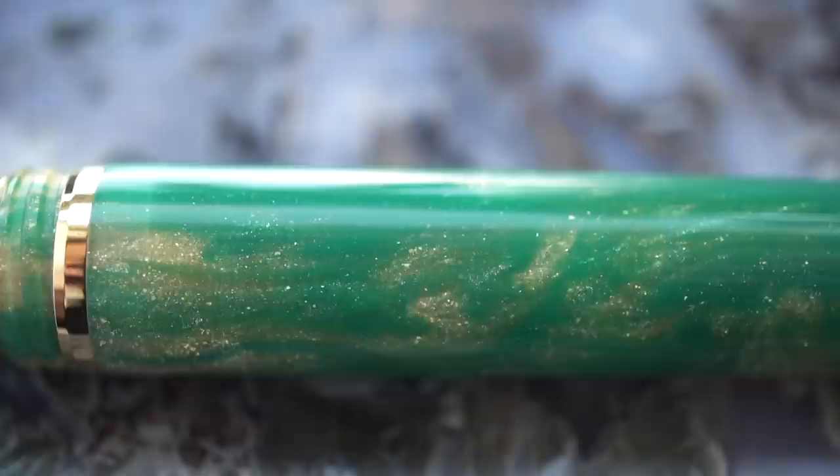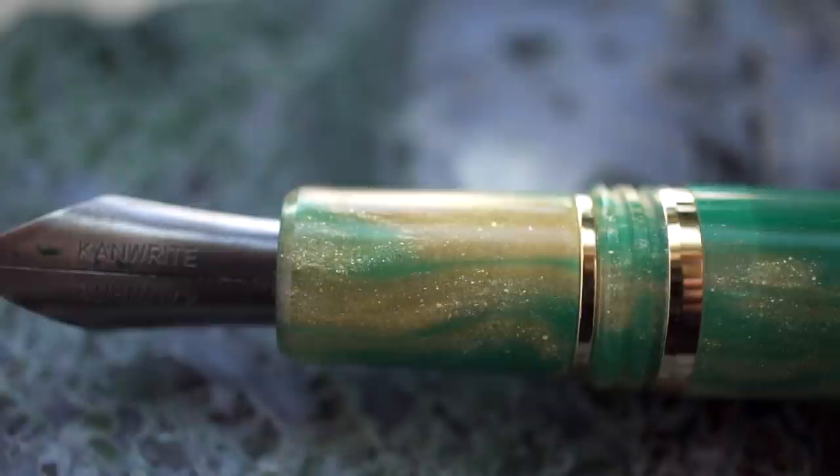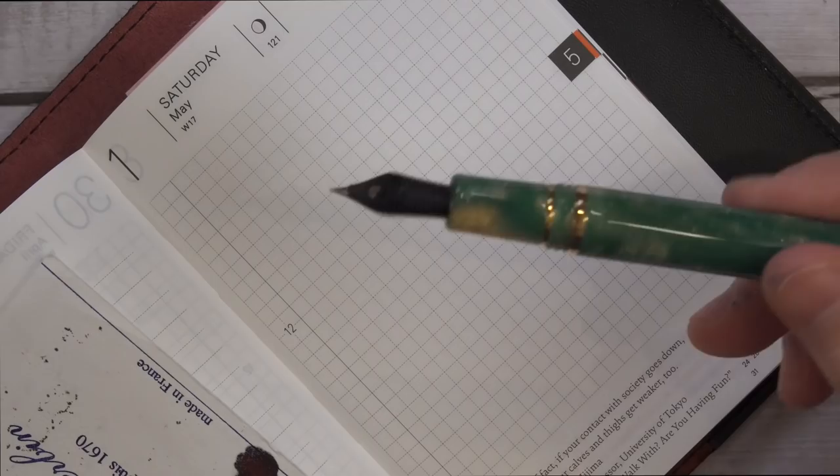This is the Esterbrook Accutron pen that was generously given to me by a friend of mine, but instead of leaving that nib in, I stuck in a Titanium nib from Canrite. I'll talk about this pen more in my next video.